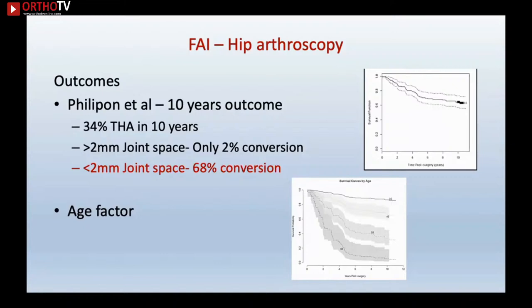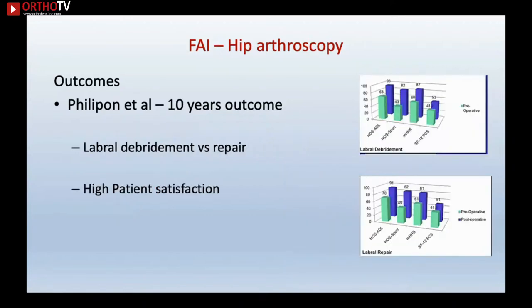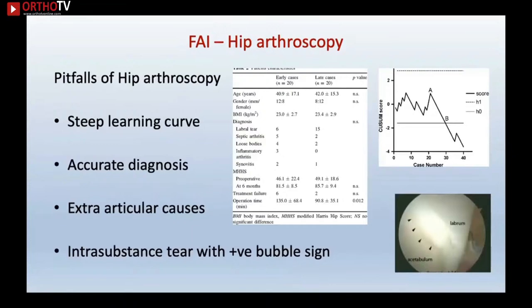Age above 40 years is associated with higher conversion to total hip replacement. The study also found labral repair has higher patient satisfaction than labral debridement. Hip arthroscopy is a good procedure with fewer complications and better outcomes, but has a steep learning curve. Accurate diagnosis is essential, and be aware of extra-articular causes. Intrasubstance tears with a positive bubble sign intraoperatively need repair.